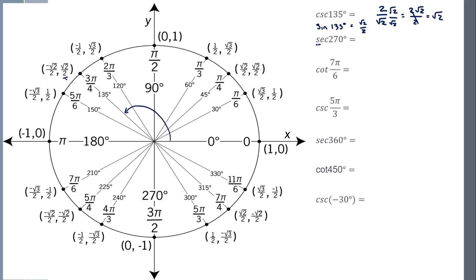So secant of 270, secant relates to the cosine. So I have to think cosine of 270. So we're going to go all the way to that. Cosine is going to be 0. Now I have to flip it. Now it's weird. We have to think of that as 0 over 1. So if I flip that, I get 1 over 0, which is undefined, because you can't divide by 0.